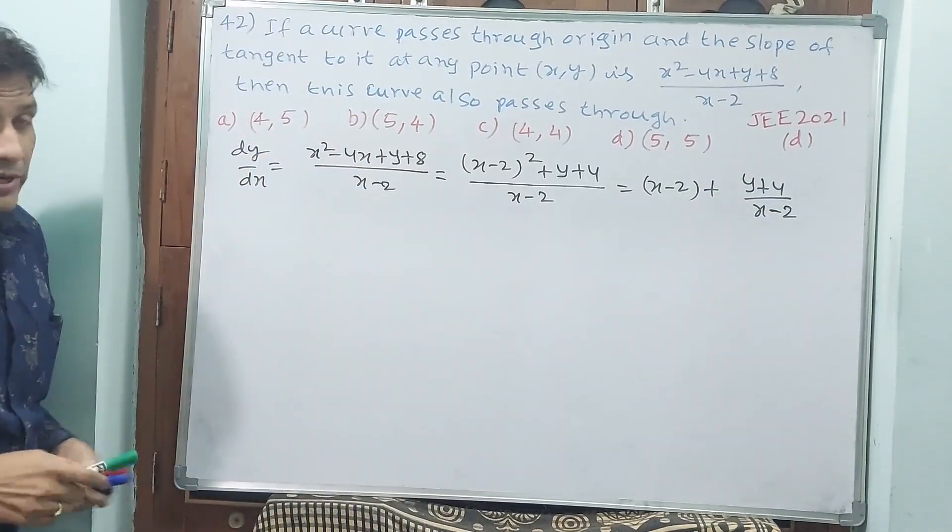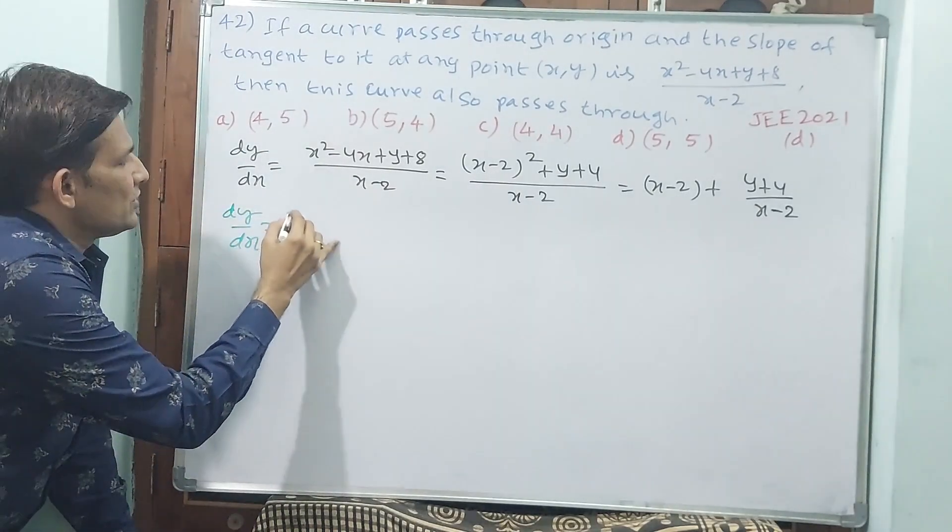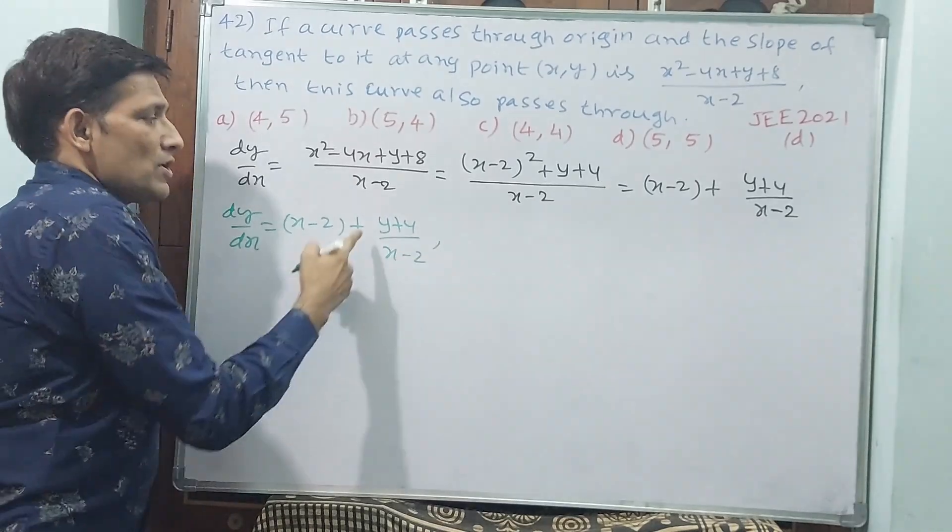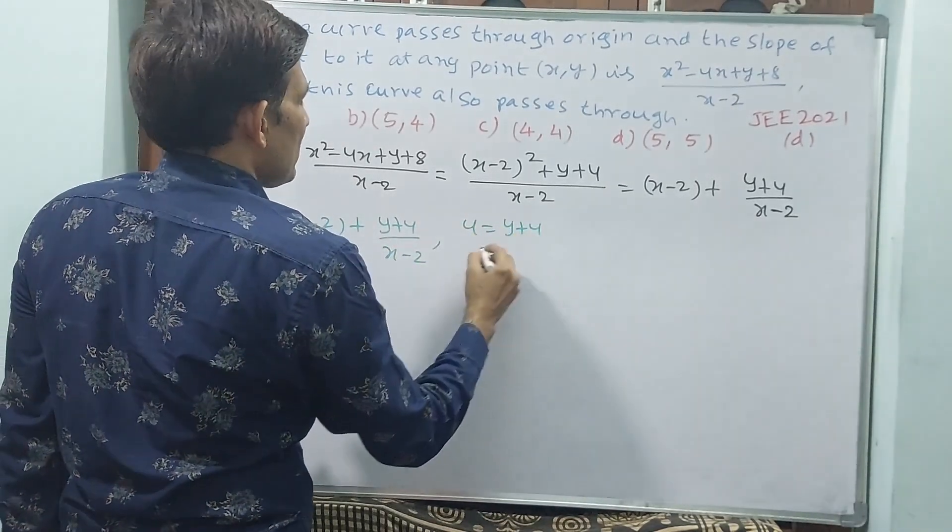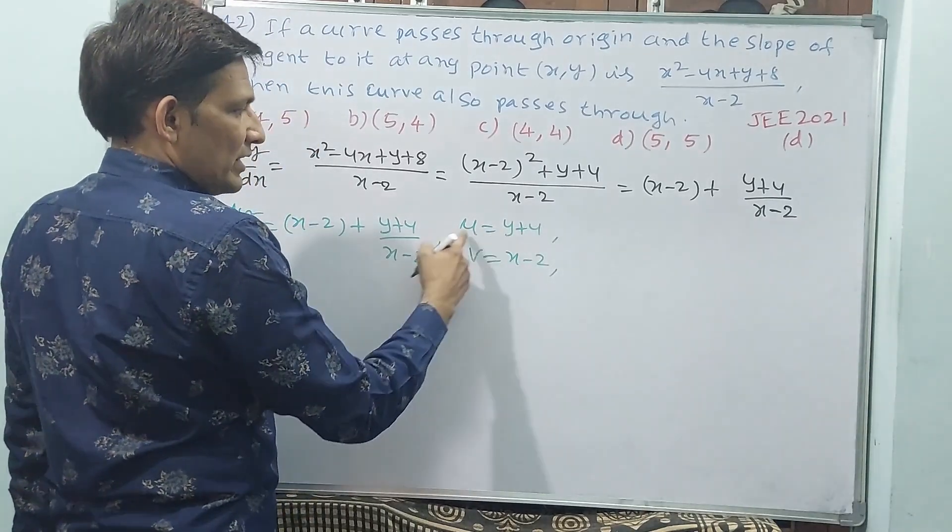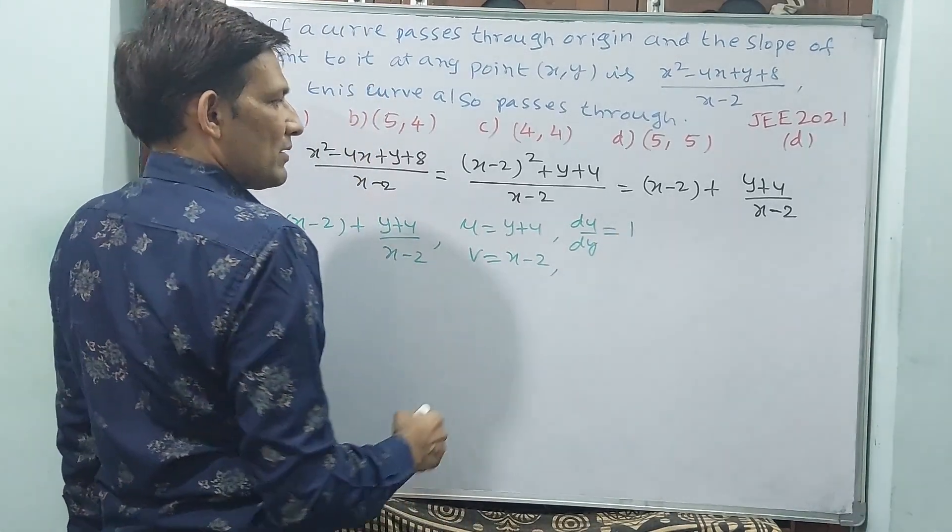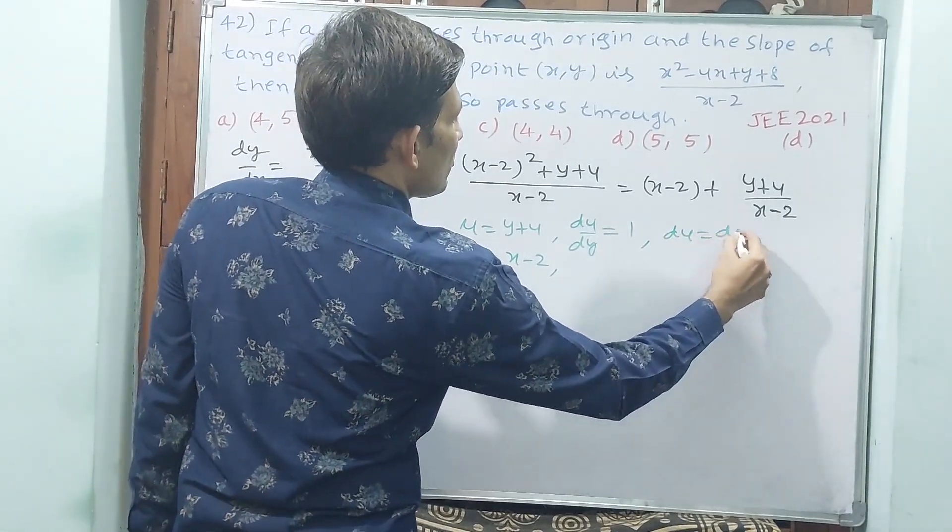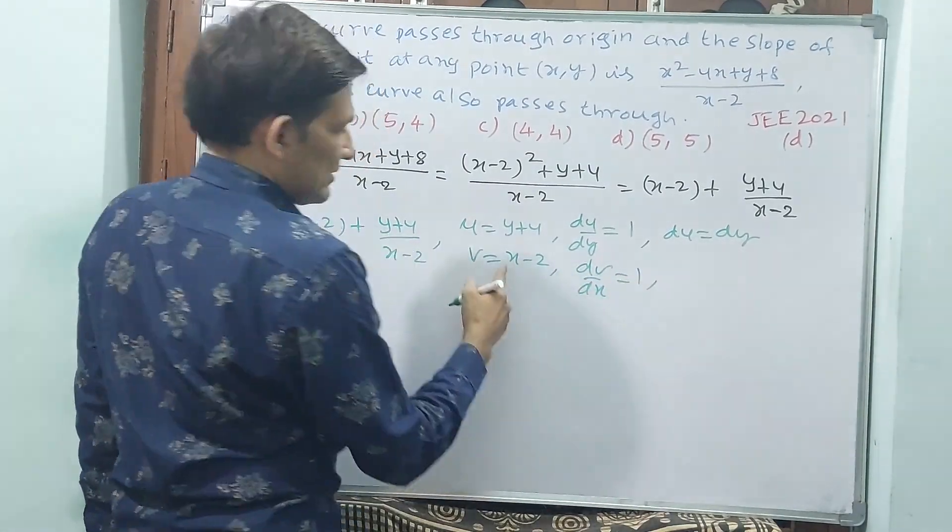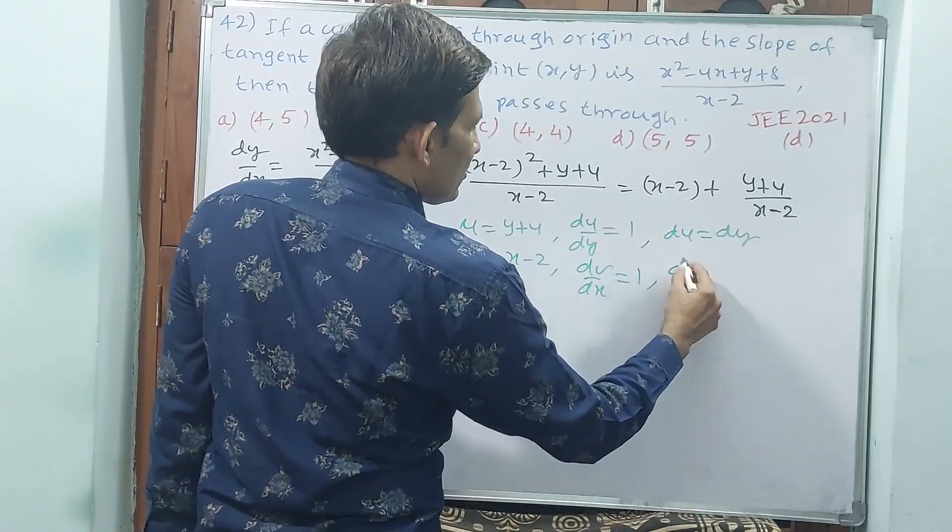Now I am going to change that. Observe carefully. dy/dx equals x - 2 + (y + 4)/(x - 2). This is u/v. I am taking u as y + 4, v as x - 2. du/dy equals 1, that means du equals dy. Here also, dv/dx equals 1. With respect to x, if I do dv/dx, 1. This is 0. That means here also dv equals dx.